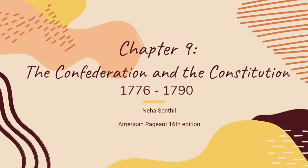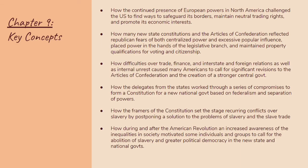Hey guys, welcome back to the channel. Today we're going to be going over chapter 9 of the American Pageant titled 'The Confederation and the Constitution' from 1776 to 1790. We're going to be using the 16th edition of the American Pageant. If you have an earlier or later edition or a completely different textbook, don't worry about it — the content is going to be the same. Here are the key concepts for this chapter, located at the start of every chapter in the American Pageant. These basically serve as the takeaways from the chapter, and what I like to do is match the key terms to each bullet point, which will really help you organize your information.